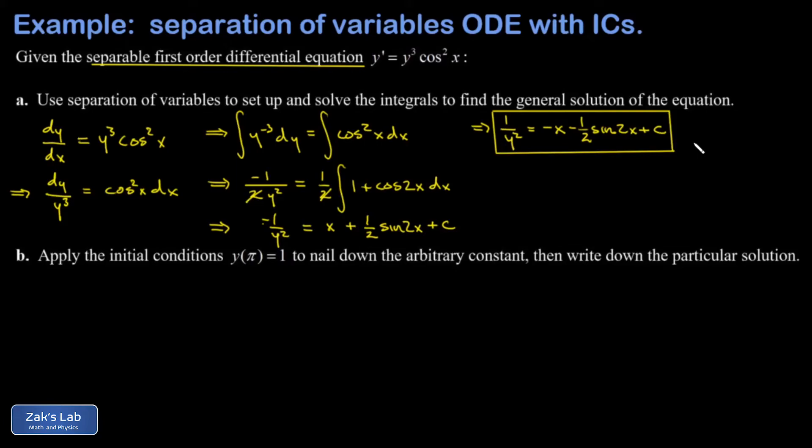This is just to avoid the complication of having to do a ±√ of whatever's on the other side of the equation. I'm just leaving it in implicit form. In part b, we can still apply an initial condition in implicit form.